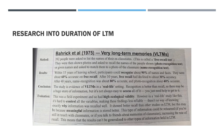Within 15 years of leaving school, participants could recognise about 90% of names and faces and were about 60% accurate on free recall. After 30 years, free recall declined to about 30% accuracy. After 48 years, name recognition was still 80% accurate and photo recognition about 40% accurate. This shows that in a real-life setting there is a large duration of long-term memory, even though it does decline a little.